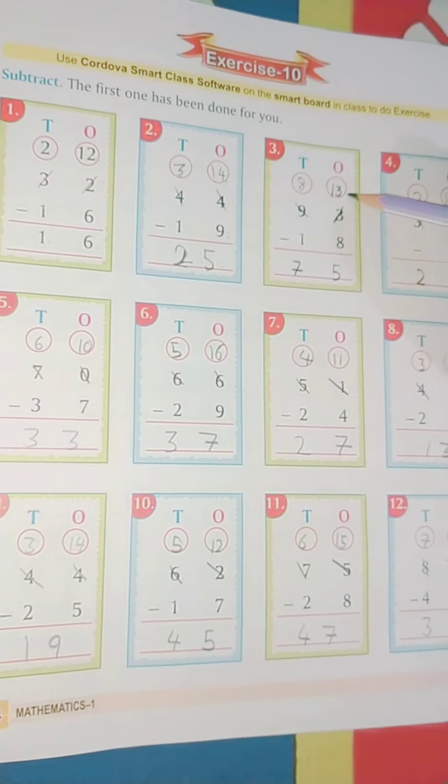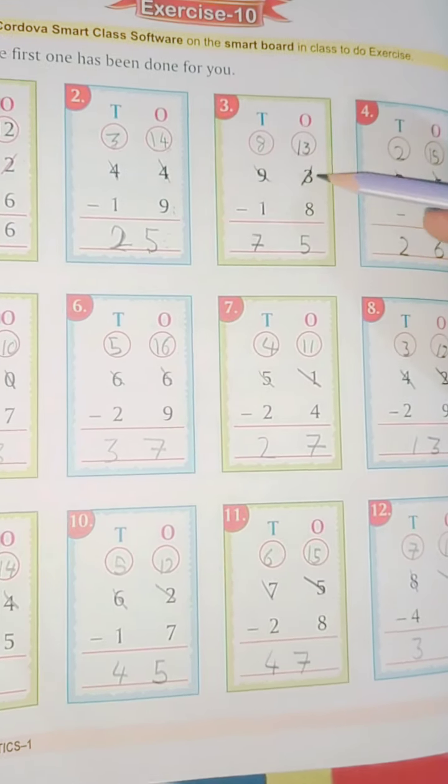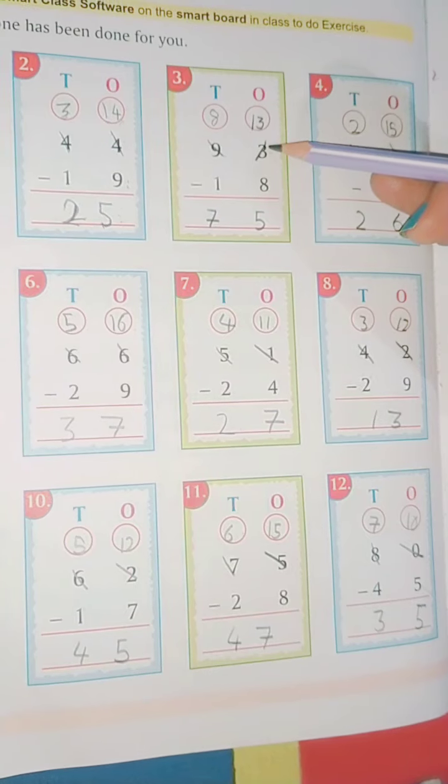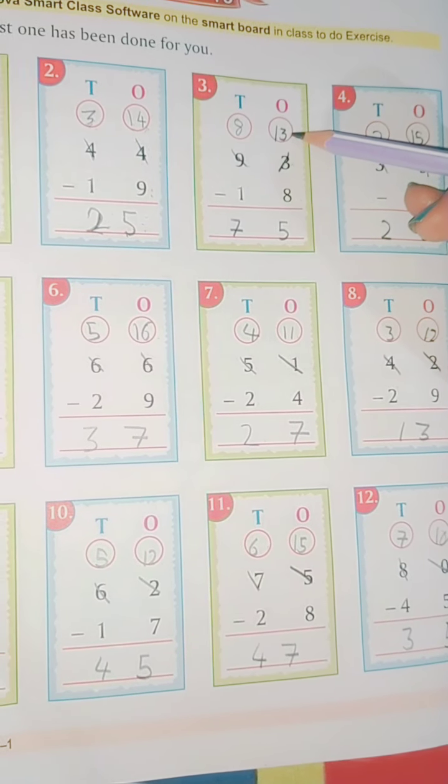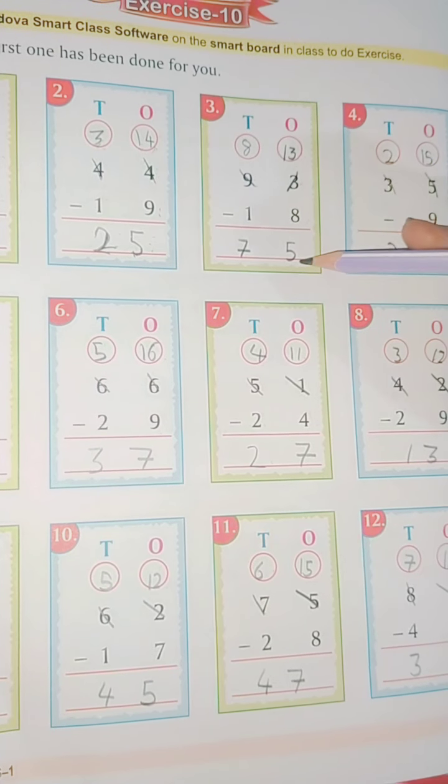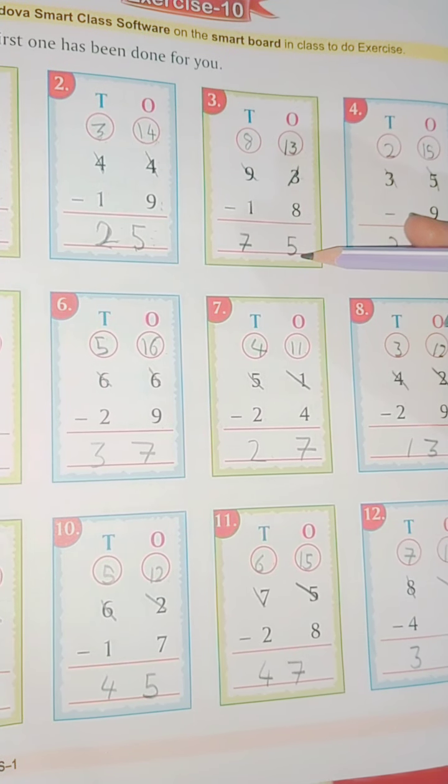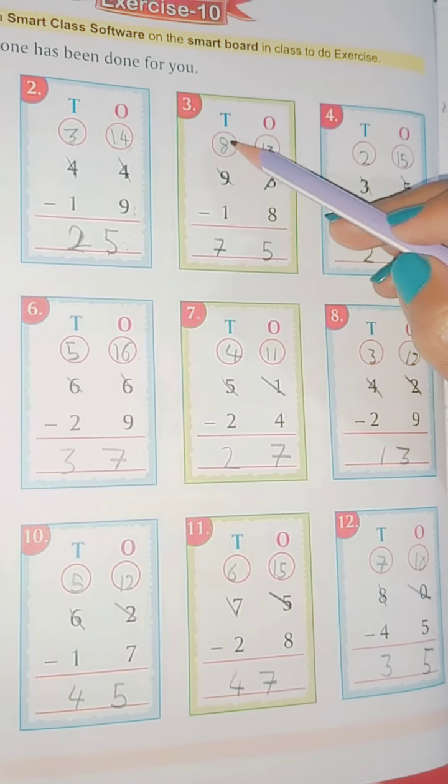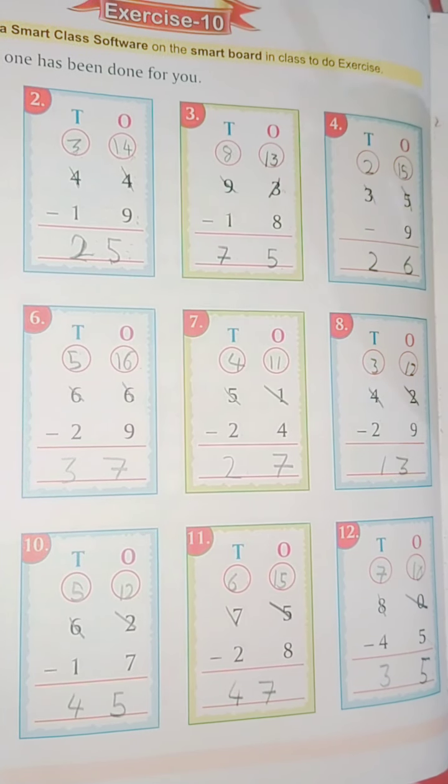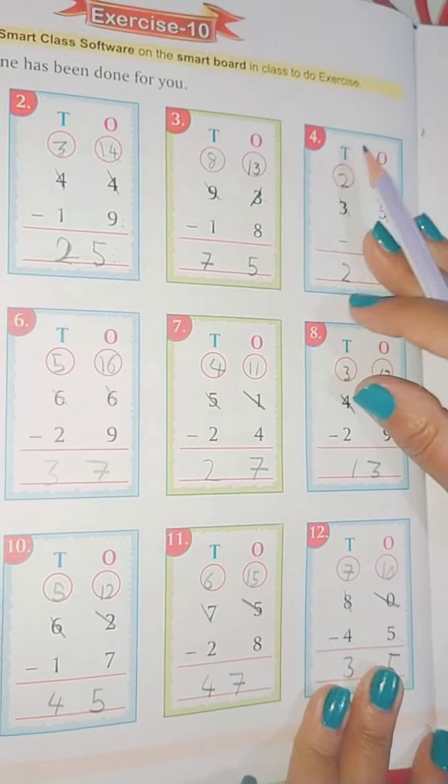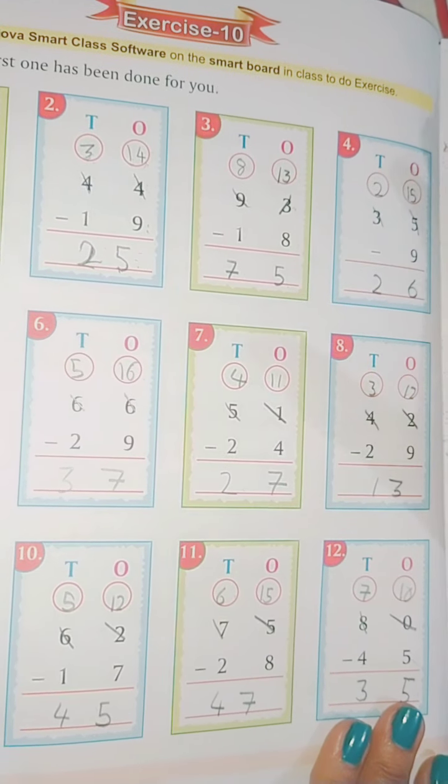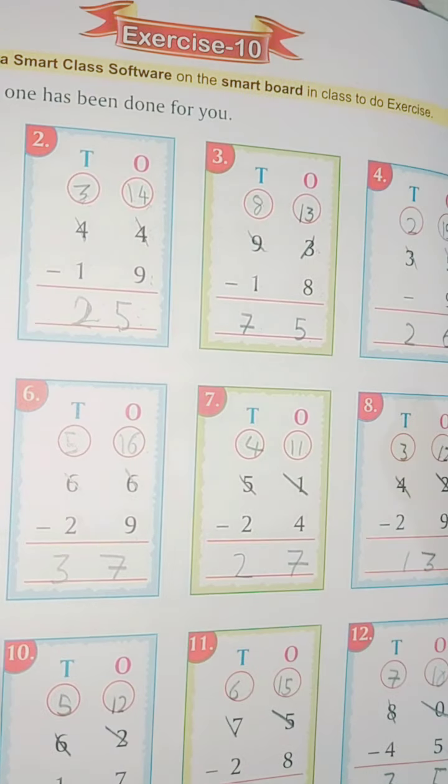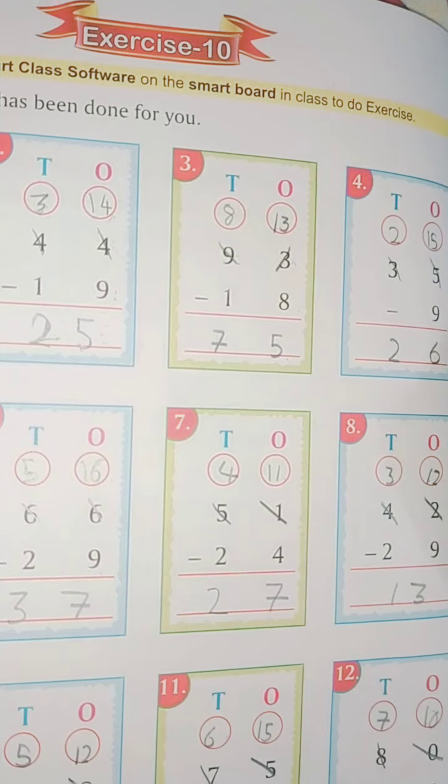Now see the next sum. Ninety-three minus eighteen. Now 3 is less and 8 is big. So we will borrow one from here, this will become 13. 13 में से 8 minus करेंगे, 5 बचेगा. 5 is the remainder. Now from 9, one has given to 3, so 8 is left. 8 minus 1 is 7. Please see it very carefully, understand it, and then do four to five sums in your rough copy for practice. Then only you will be able to understand. It is not easy to understand.